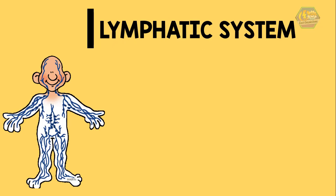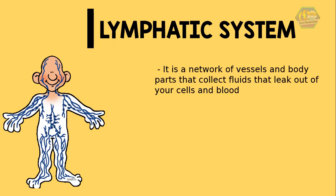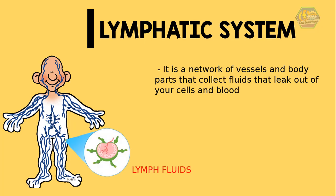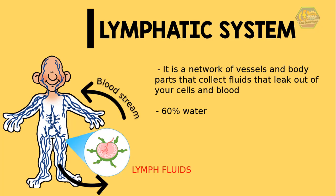So what is the lymphatic system? You might hate cleaning, but your lymphatic system loves it. It is a network of vessels and body parts that collect fluids that leak out of your cells and blood. These fluids are called lymph fluids. Your body is actually more water than you can imagine — in fact, it's more than 60% water. Some of it gets out, and what gets out is swept by your lymphatic system and returned to your bloodstream, otherwise the fluid would build up in your tissues and you would swell up like a balloon.